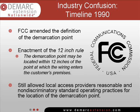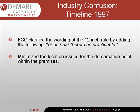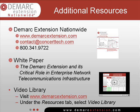The FCC acknowledged this confusion with the passage of the 12-inch rule, which provided guidelines for the location of the demarcation point. In June of 1997, the FCC amended the 12-inch rule to minimize location issues and further standardize the demarcation point. For more videos about the DMARC Extension, visit us online at www.demarquextension.com and select Video Library under the Resources tab.